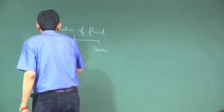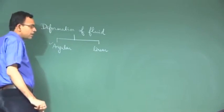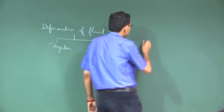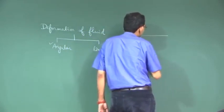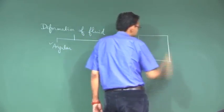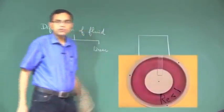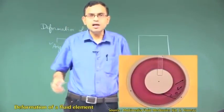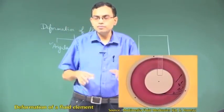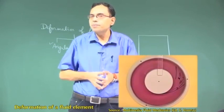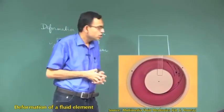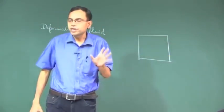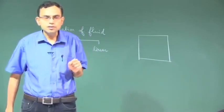We will start with angular deformation and I will try to present a simplistic picture of a two-dimensional fluid element. The question is that in general the fluid behavior is more accurately represented by a three-dimensional picture, so why will a two-dimensional fluid element be good enough to describe angular deformation?